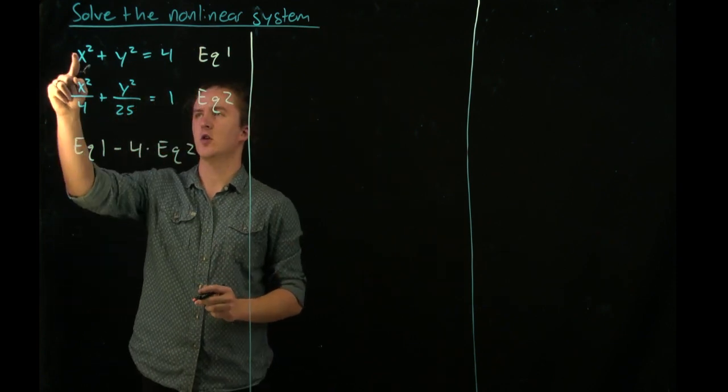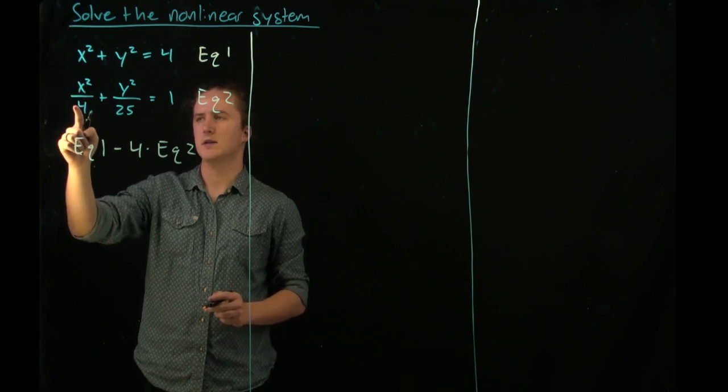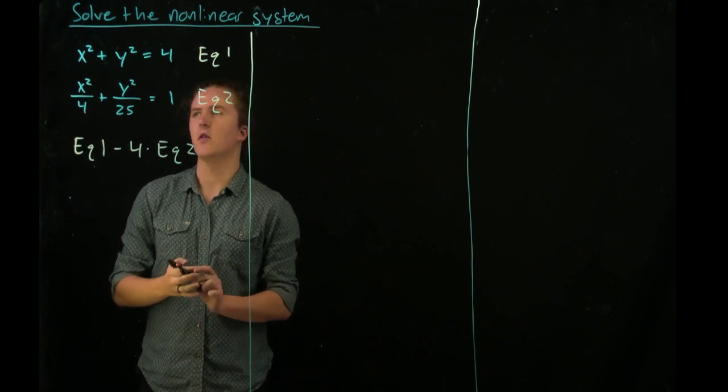In doing so, we will produce x squared minus 4 over 4 x squared, which will effectively cancel out the x squared.